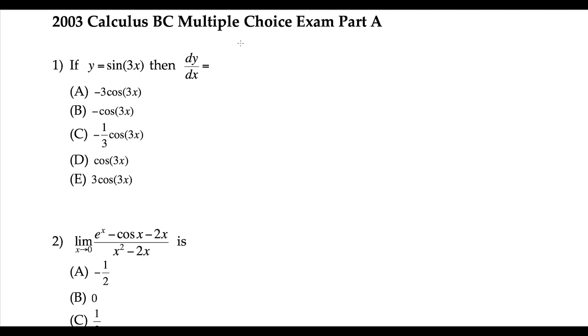The derivative of the outside is cosine. We keep the inside as 3x and then we multiply by the derivative of the inside, which is 3. So now we just match this — this is going to be choice E.